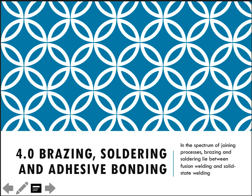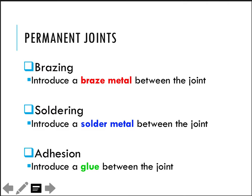This is the last topic for your course number one: brazing, soldering, and adhesive bonding. These joining processes lie in the spectrum of joining processes. Brazing and soldering lie between fusion welding and solid state welding, because neither are we melting the base material nor just producing plastic deformation to join the material — it is basically in between fusion welding and solid state welding.